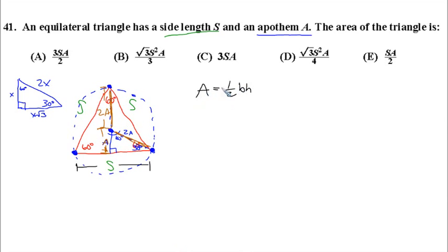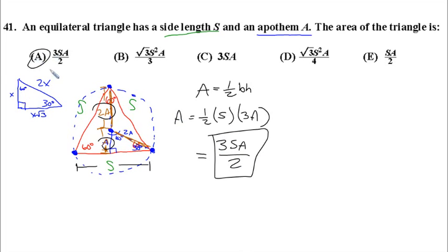So, let's make our final substitution here. This area is one half the base of the triangle, which is s, times the height of the triangle, which here is 2a plus a. Or, in other words, a total of 3a, or 3 times the length of the apothem. If we simplify that, we get 3sa over 2, or answer choice A.